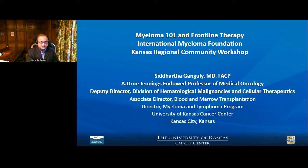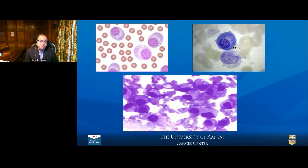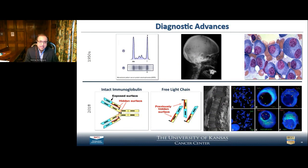Multiple myeloma is a cancer of our immune system. The name of the cancer cell is called a plasma cell. On this slide you can see some normal and some not-so-normal-looking plasma cells. Normally we all have plasma cells — they make antibodies to fight off infections. For some reason, if normal plasma cells become abnormal through genetic mutations, translocations, or environmental factors, a clone emerges. Not all plasma cells become malignant — some do, and they start making an abnormal antibody and proliferating in the bone marrow.